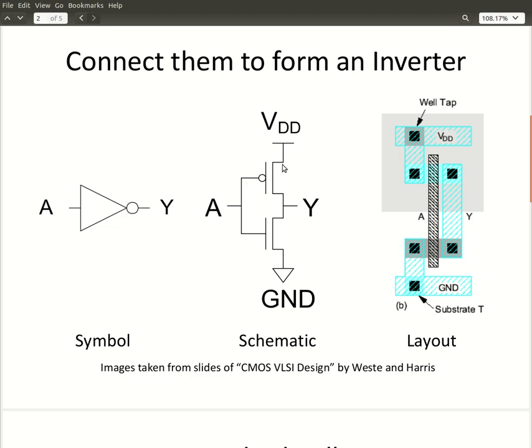The source of the PMOS transistor is connected to the supply shown as VDD here, and the source of the NMOS transistor is connected to ground. The drains of the two devices are shorted to form the output shown as Y here.